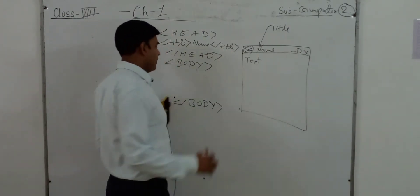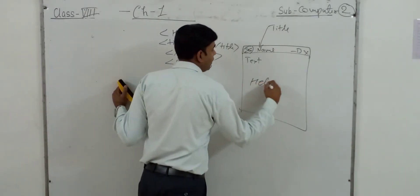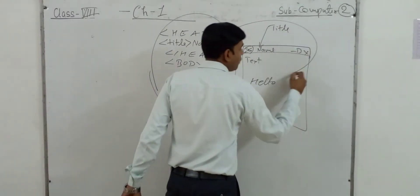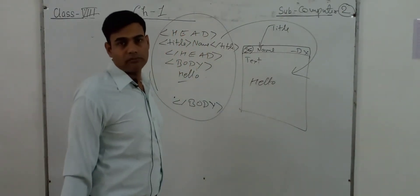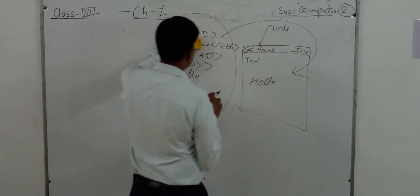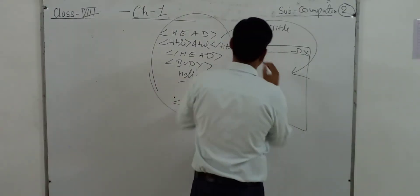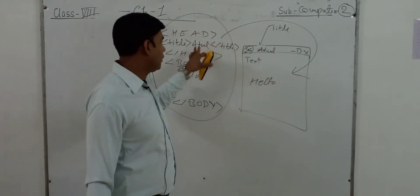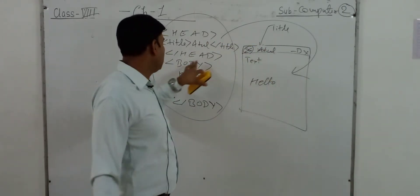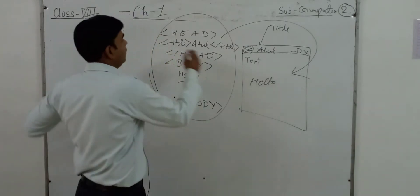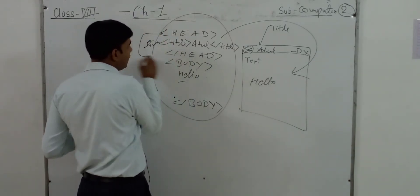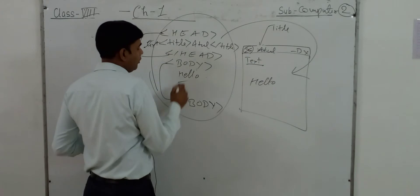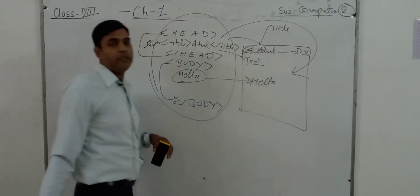In the body section, whatever text you write will appear in the main browser window. So here is our HTML code and this is the effect on the browser. Whatever title you have given will appear in the title bar, and whatever you have written in the body will be displayed in the page area. You have three parts visible: title bar, head area, and body.